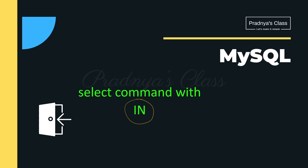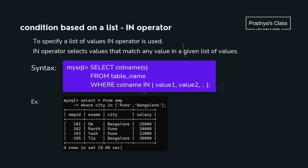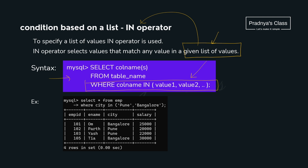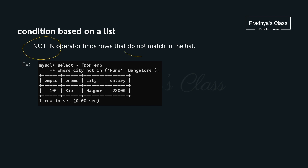The IN and NOT IN operators work with a list of values. The syntax is: WHERE column_name IN (list of values). For example: SELECT * FROM employee WHERE city IN ('Pune', 'Bangalore') — all records where city is Pune or Bangalore are displayed. The reverse, NOT IN, excludes records matching those values in the list.